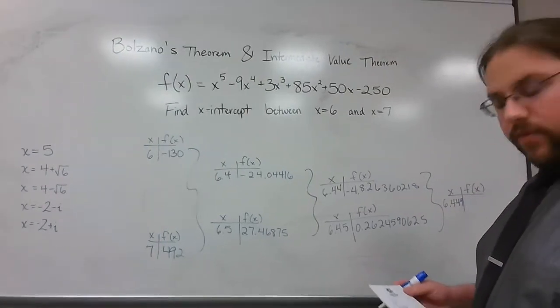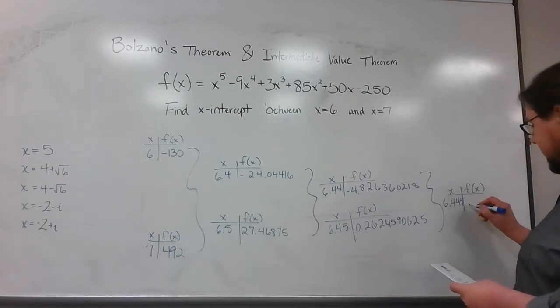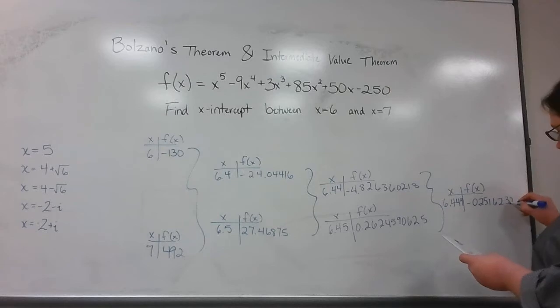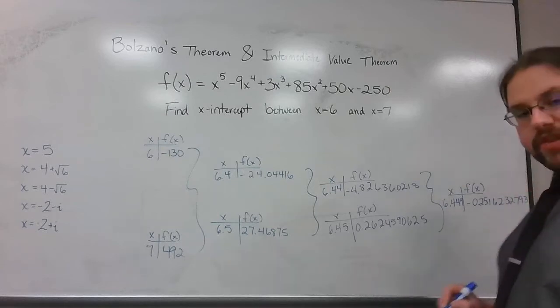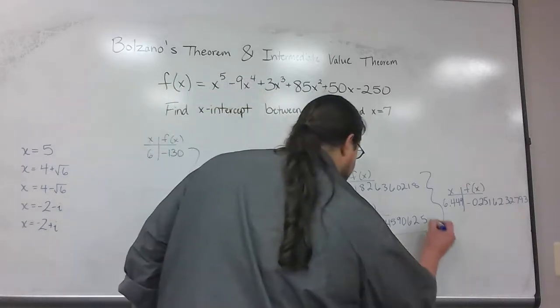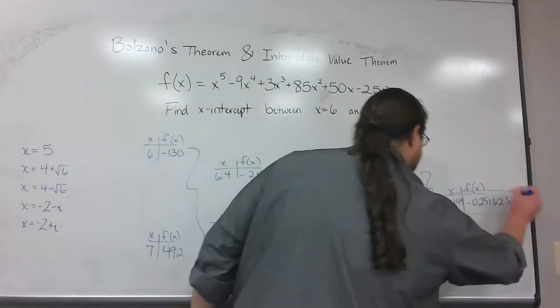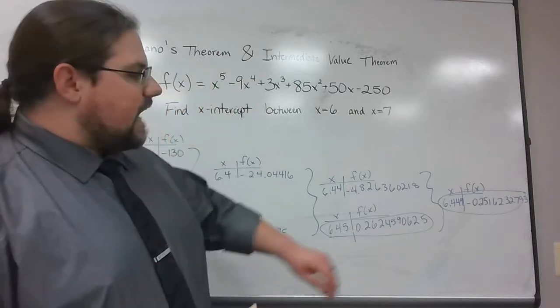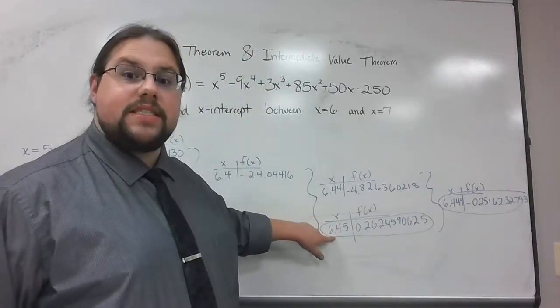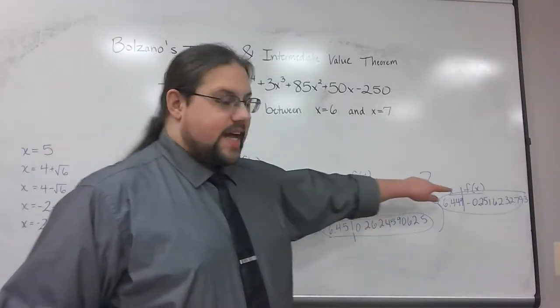When I tried 6.449, I got negative 0.2516232793. Here's the thing. At this moment, here's my positive number. Here's my negative number. So it's got to be between 6.449 and 6.450. That's the important part. That's a good distinction right now.